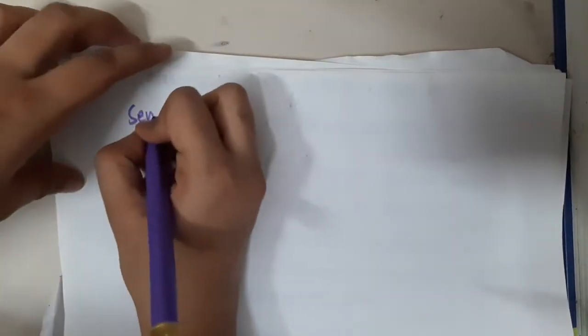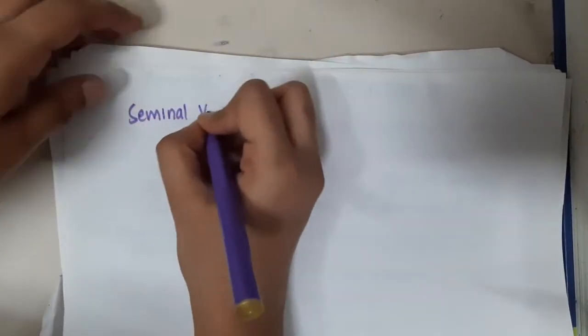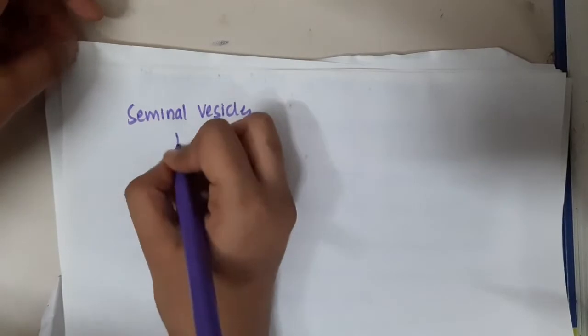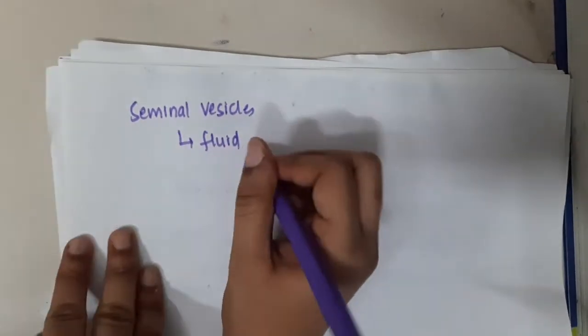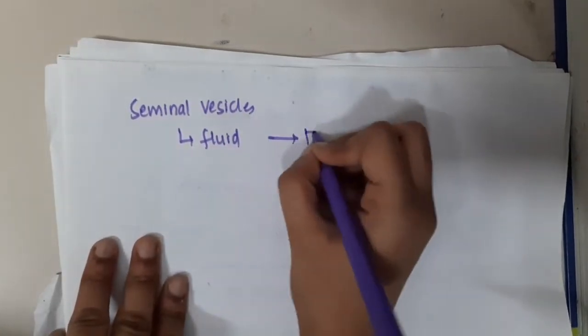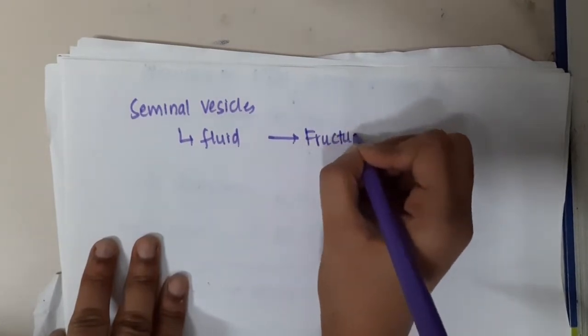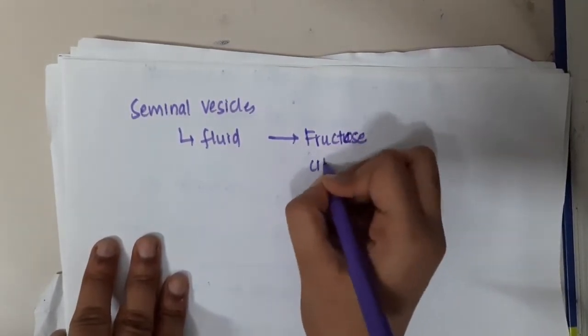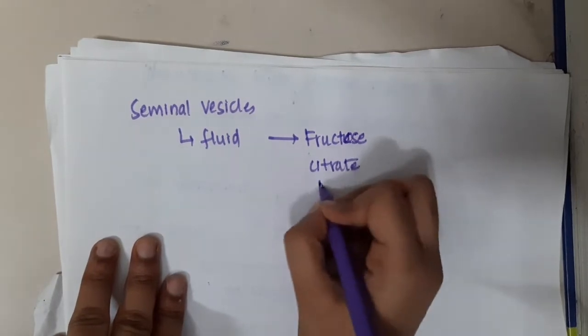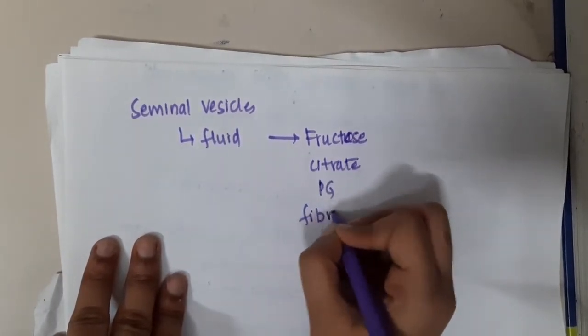This is about the seminal fluids. The seminal vesicle fluid, the fluid secreted by the seminal vesicles, is rich in fructose, citrate, prostaglandins, and fibrinogen.